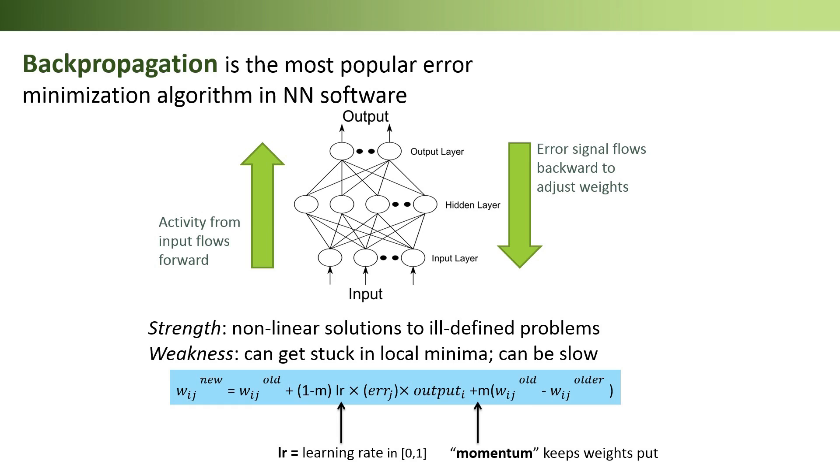To try and address these two weaknesses, there are several additional parameters that the software uses. Two common ones are learning rate and momentum.